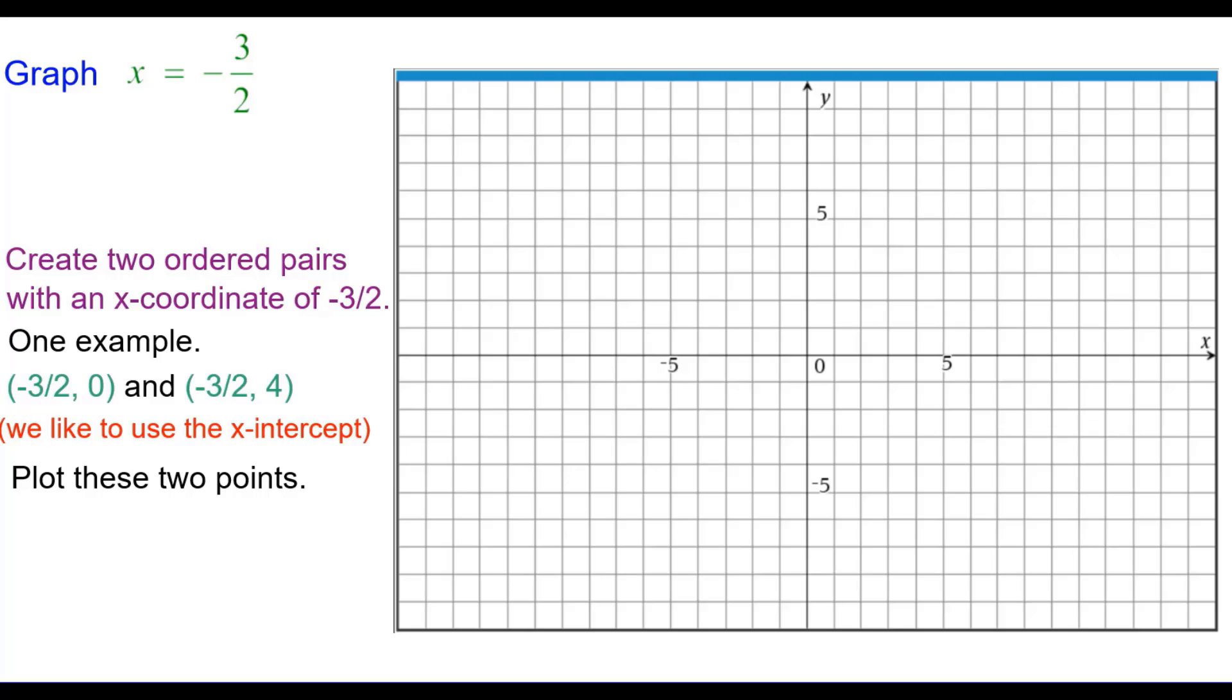So plotting those two points, so negative 1 and a half comma 0 and negative 1 and a half up 4.